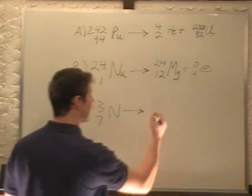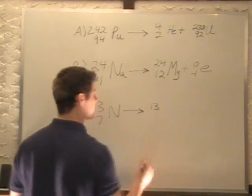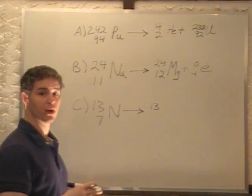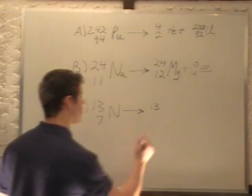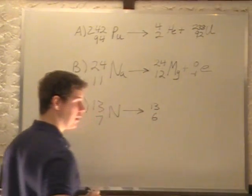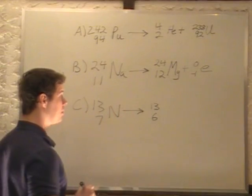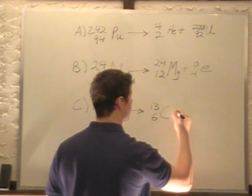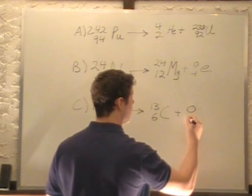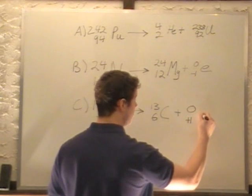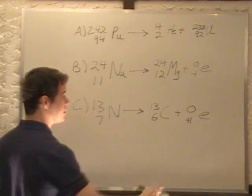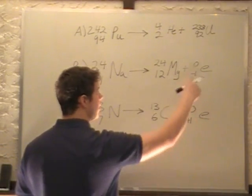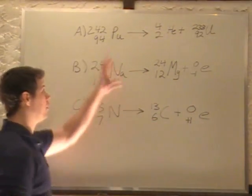So 13 stays the same again, because we're just transforming a proton to a neutron, but we're losing a proton, and this is going to 6. 6 is carbon, so now we have carbon-13, plus we get a positron, and that's +1e. So this denotes a positron, and this is an electron, and those are your final answers.